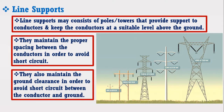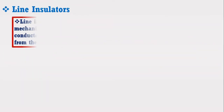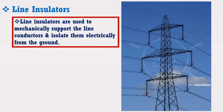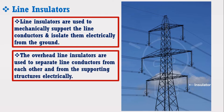Now I am going to discuss about the line insulators of the transmission line. Line insulators are used to mechanically support the line conductors and isolate them electrically from the ground. Consider the figure in which the arrow shows the line insulators used to electrically isolate the conductors from the tower. It is necessary to prevent the short circuit between the conductor and tower. Steel towers are also a type of conductor and the aluminium conductor is also working as a conductor. Therefore, if they are directly connected, a short circuit will occur and it will damage the transmission line. That is why overhead line insulators are used to separate the line conductors from each other and from the supporting structures electrically.